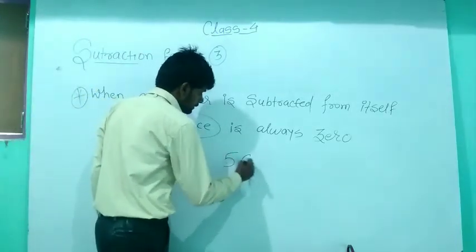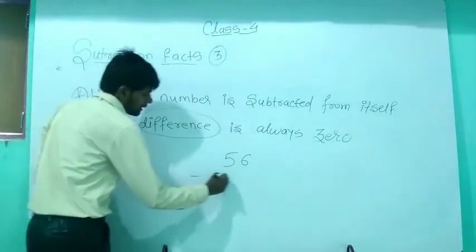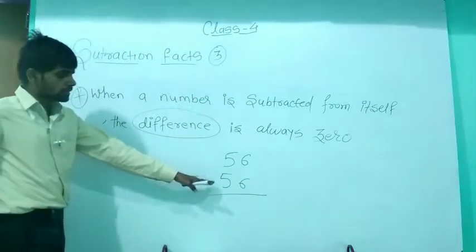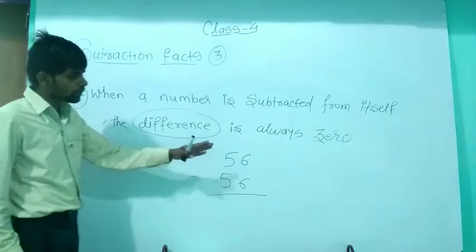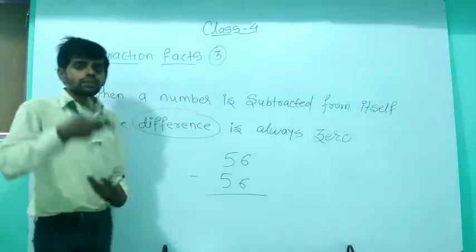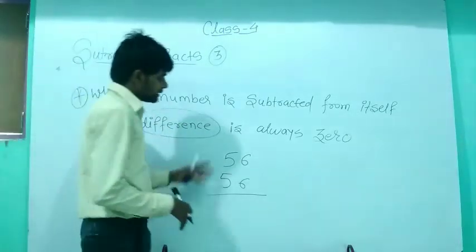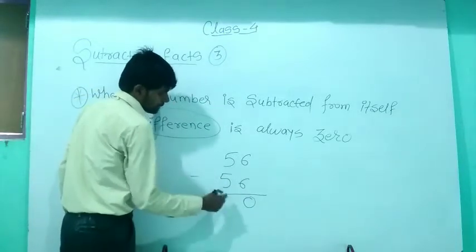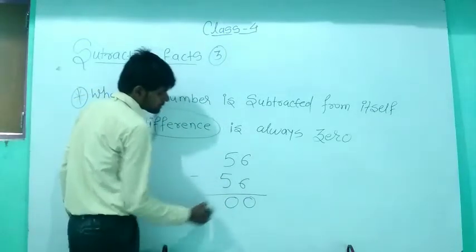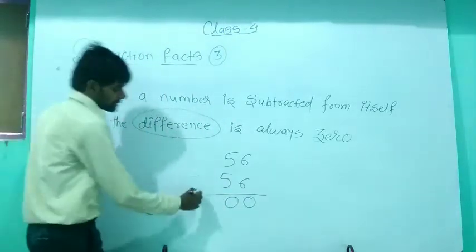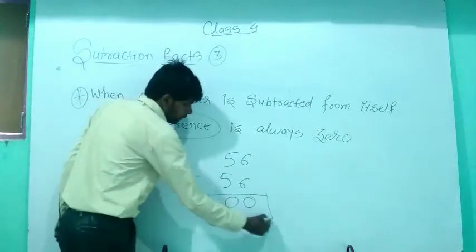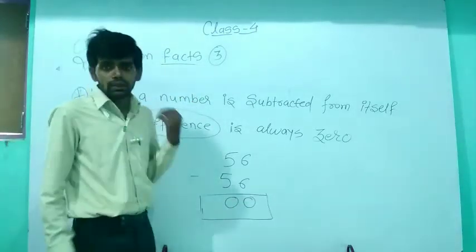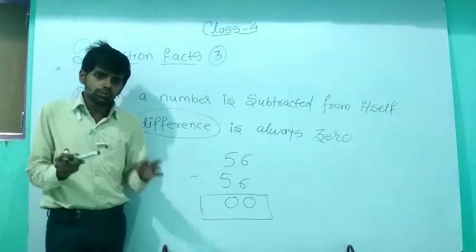For example, 56 minus 56. Here I am subtracting 56 from 56 — the number is subtracted from itself. Six minus six is 0, and five minus five is also 0. So the difference is 0.